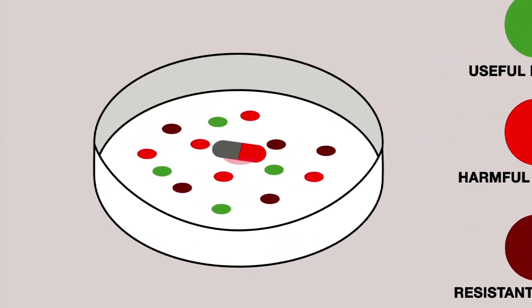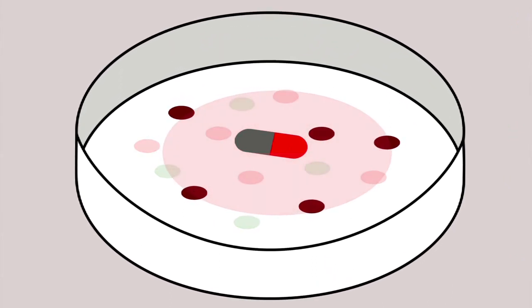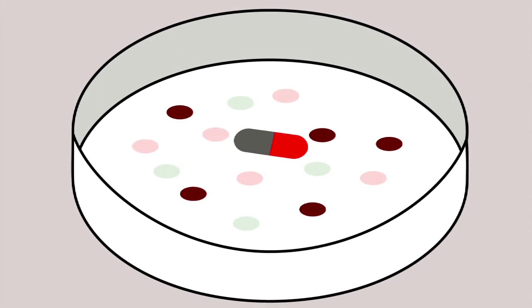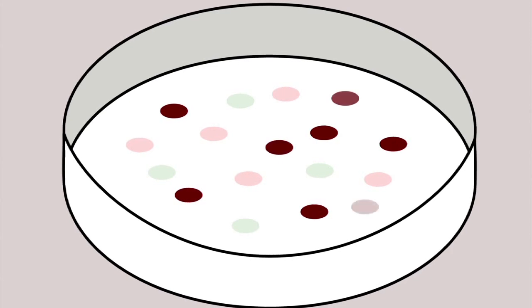When an antibiotic is introduced, most of the bacteria disappear, including the good bacteria which are there to help our bodies defend themselves. So only the resistant ones remain, and they are free to multiply.